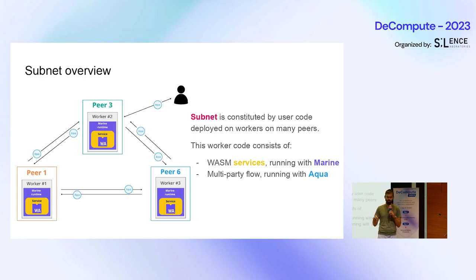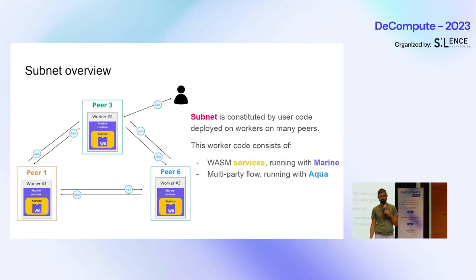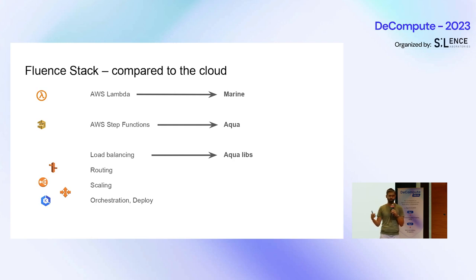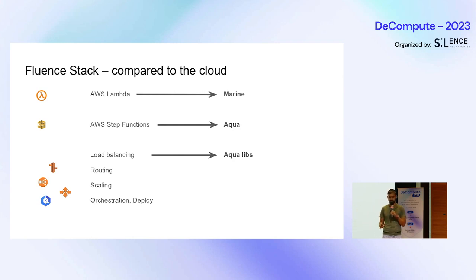Once deployed, it forms a subnet. A subnet is defined by the user code deployed on workers on many peers. This code consists of WebAssembly services running via the Marine runtime. The multi-party flows between all these peers and workers run with Aqua. For comparison with the cloud stack: for AWS Lambda local compute jobs, we have Marine; for step functions and distributed flows, we have Aqua. For emergent behaviors like load balancing, routing, scaling, orchestration, and deploy, we have Aqua libraries — they are scriptable and pluggable, not part of the protocol.